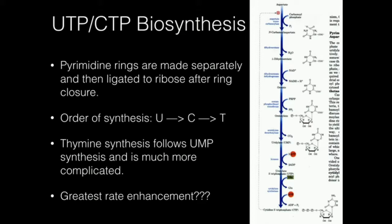Remember, we have thymine also, but we'll cover that in a different video. The order of synthesis is always U, then C, then T. One other important thing is the allosteric regulation: ATCase, or aspartate transcarbamylase — the first enzyme in this pathway — is allosterically inhibited by the end product, CTP. If CTP is high enough in the cell, it comes back and inhibits ATCase, which makes sense: if you already have enough CTP, you don't need to be making more. We're going to have a dedicated video on the allostery of aspartate transcarbamylase.